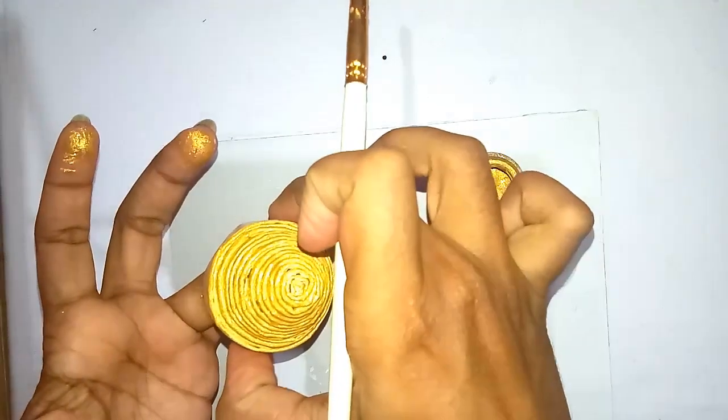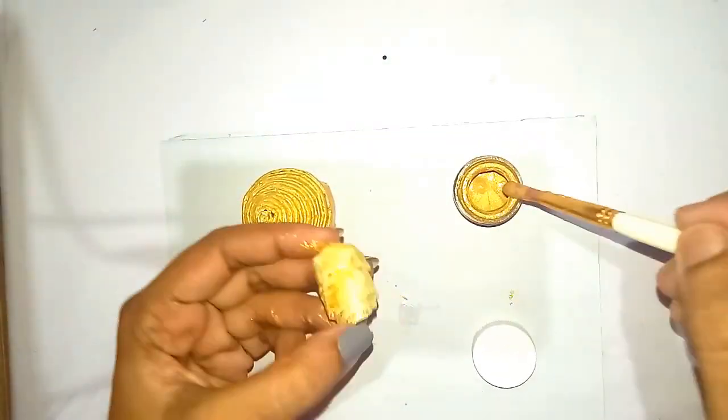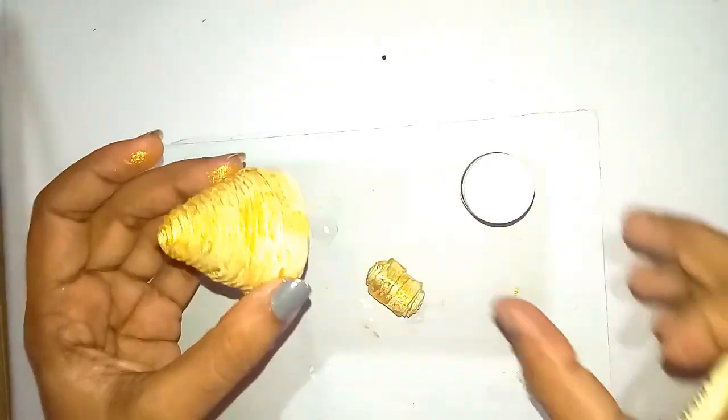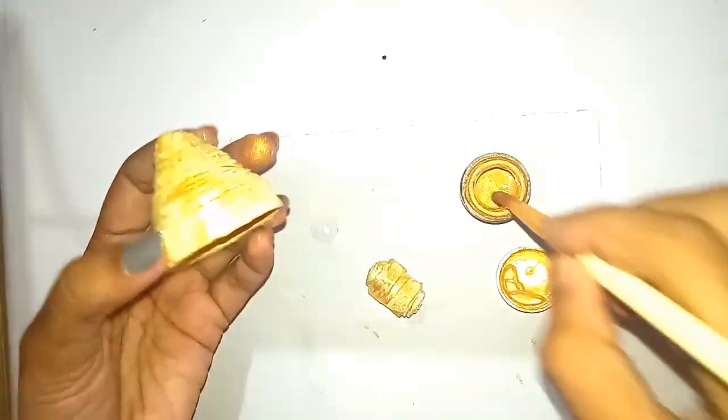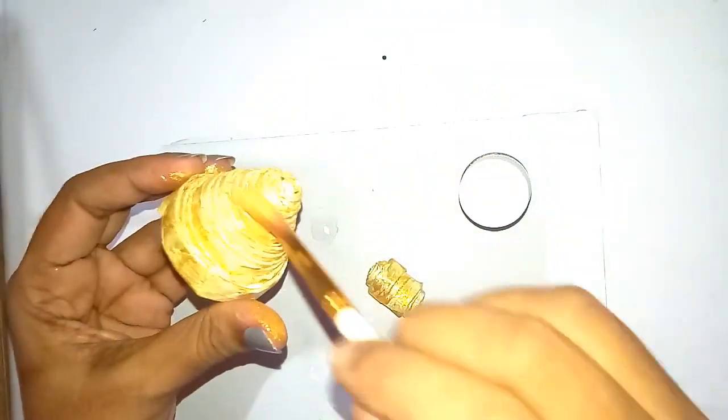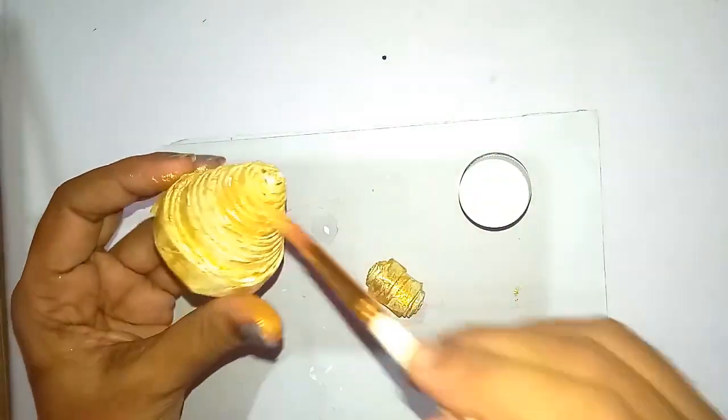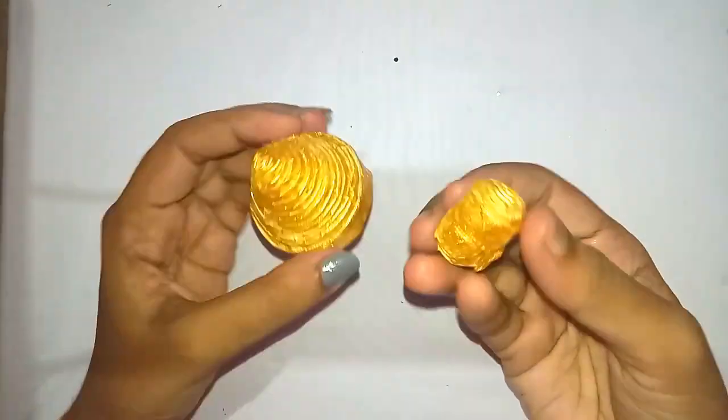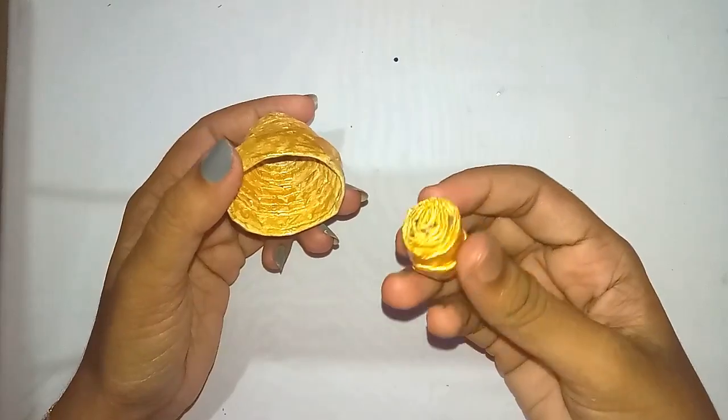After giving first coat of gold acrylic paint, you have to wait for the paint to get dried. This is how it looks after the first coat is dried. Again, you have to give two or three coats of paint to get a proper finish. Golden acrylic paint is completely dried. Here I have given three coats of paint.